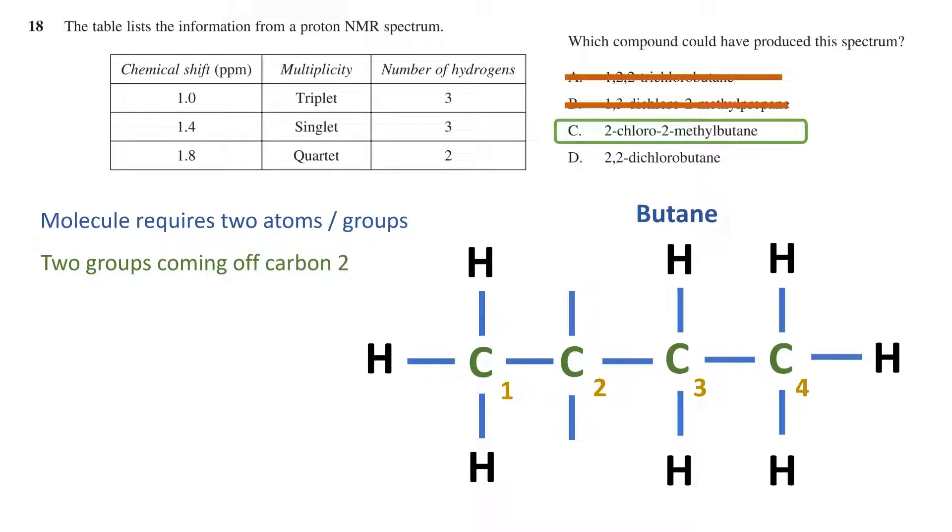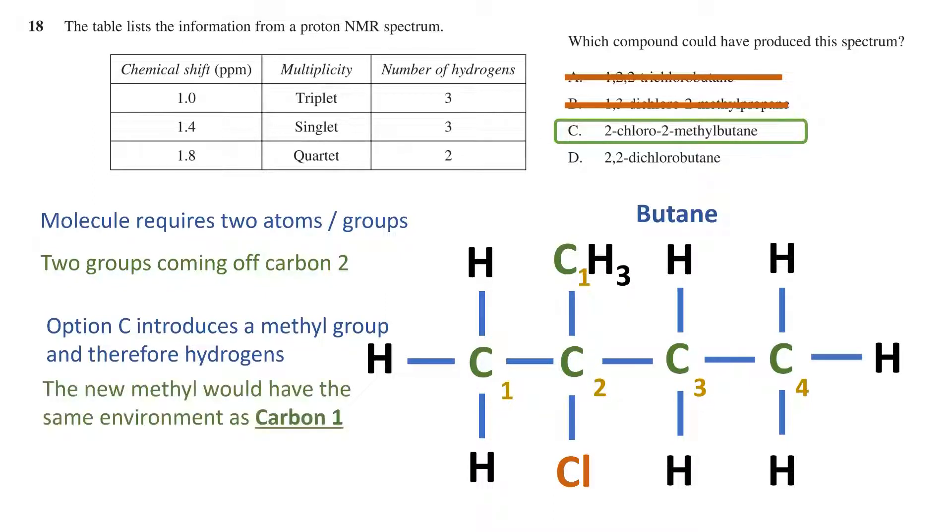Let's see what option C will look like. We have a chlorine and a methyl off the second carbon. This methyl group introduces additional hydrogen atoms. If we compare this with carbon 1, we can see that this group will have the same environment. Both have three hydrogens and are connected to the second carbon. However,